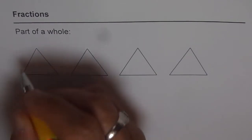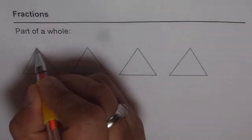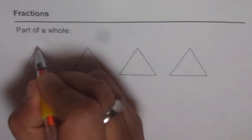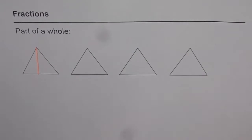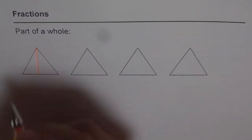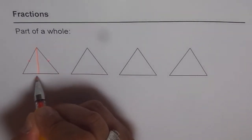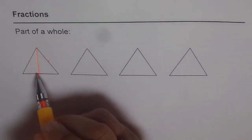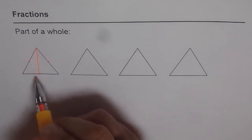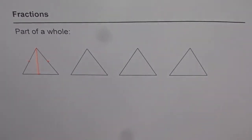One way is that we can drop a perpendicular like this. The triangle I have taken here is an equilateral triangle, which means all sides are equal. If I drop a perpendicular, I divide it into two equal parts.